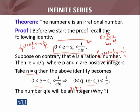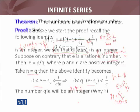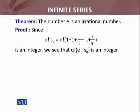Now q! · e will be an integer. Why? Because we have taken e = p/q, so q! · (p/q) = p · (q−1)!, which is an integer. Of course q! is also an integer. So we see that q! · e is an integer.